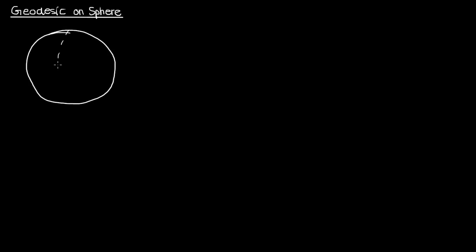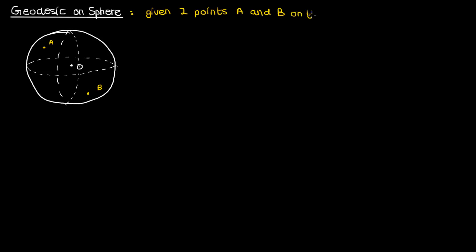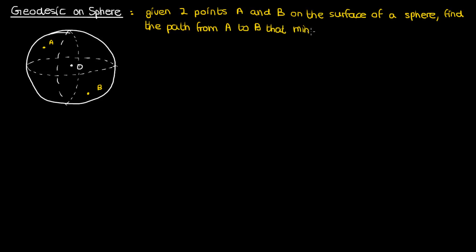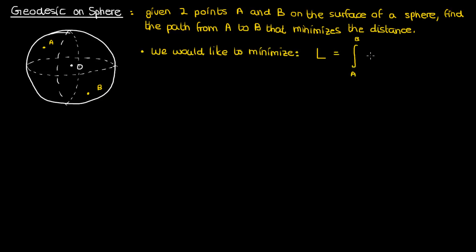Greetings students and welcome back to another video on calculus of variations. In this lesson we're going to continue solving our geodesic problems by finding the equation of the geodesic on a sphere. Suppose I have two points A and B located on a sphere centered at the origin O. Our goal is to find the path from A to B along the sphere that minimizes the distance between A and B. We can describe the length along the path from A to B using this length functional, and this is the functional we want to minimize by solving this geodesic problem.